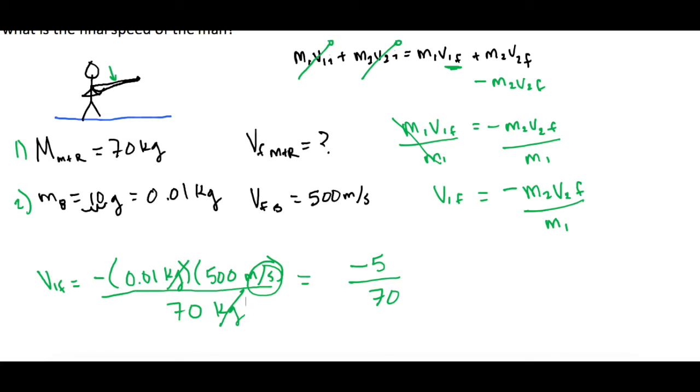So negative 5 divided by 70 is negative 0.0714—I'll just go out to four. So that we said was meters per second. We can also put this into scientific notation, which might be a little easier: 7.14 times 10 to the negative 2 meters per second. Whichever one you prefer is the same thing.